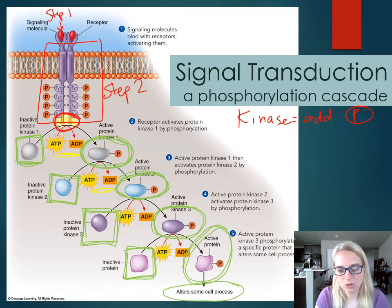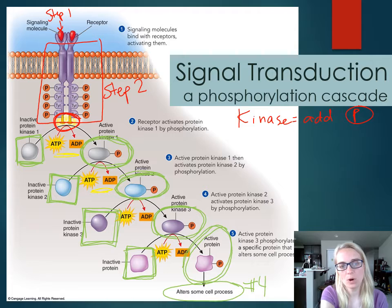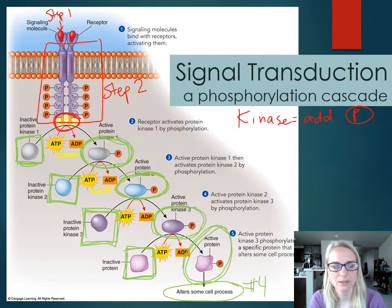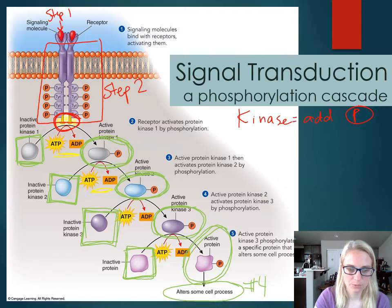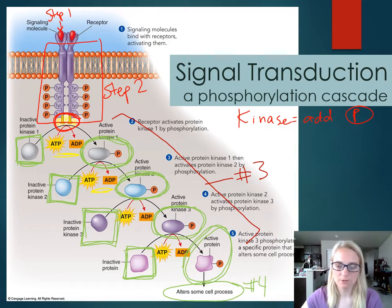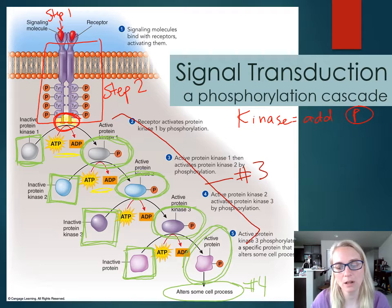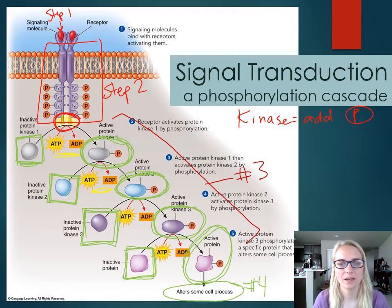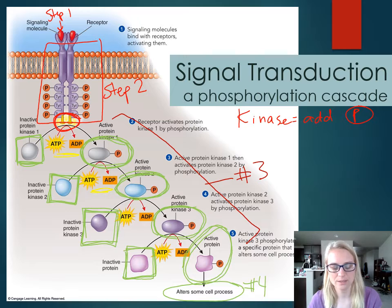That active protein leads us to step four. So step one was sending the signal, step two was receiving the signal and activating the tyrosine kinase, and step three is all of this — the signal transduction. It is a specific type called a phosphorylation cascade because it's phosphorylate, phosphorylate, phosphorylate until you reach the end of the line and phosphorylate your final protein, which then does something in the cell — which we'll talk about in step four.